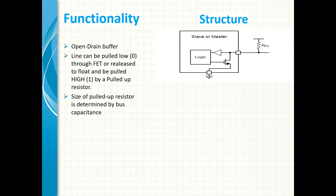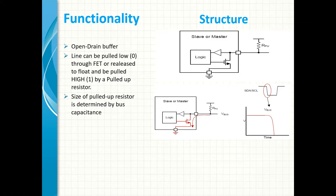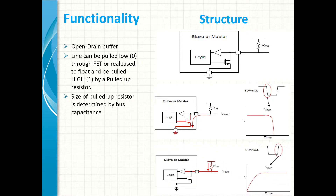Every I2C node has an open drain buffer on each of its wires. It is achieved with a single transistor that pulls the SCL or SDA line to ground when voltage greater than the threshold is applied to the transistor. The transistor floats when no voltage is applied to the base. In this case, the line is pulled high by the pull-up resistor, which is the default bus state. The size of the pull-up resistor is determined by the bus capacitance.